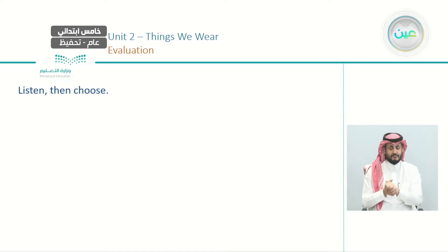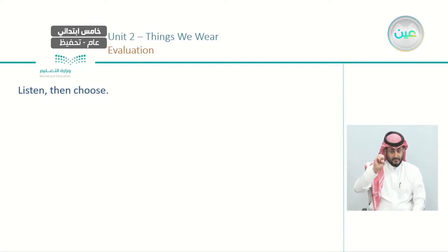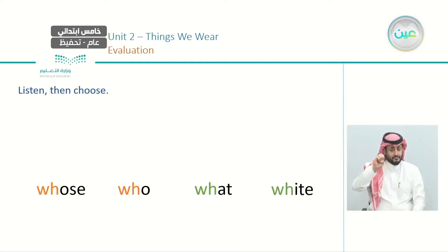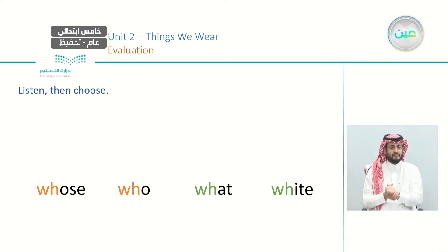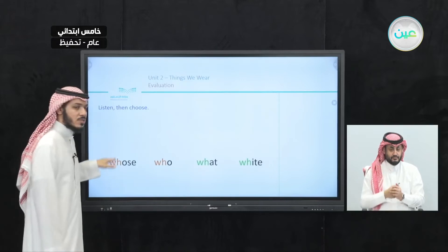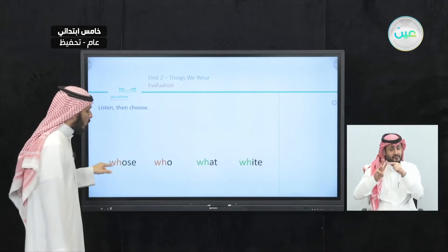Now: listen, then choose. Listen to the word and tell me which one it is. The word is: 'Whose.' Listen again — 'Whose.' Which one is it? This one. Excellent! So this is 'whose.' If you have W-H like this, we pronounce it as 'H' — 'whose.' The W here is silent.